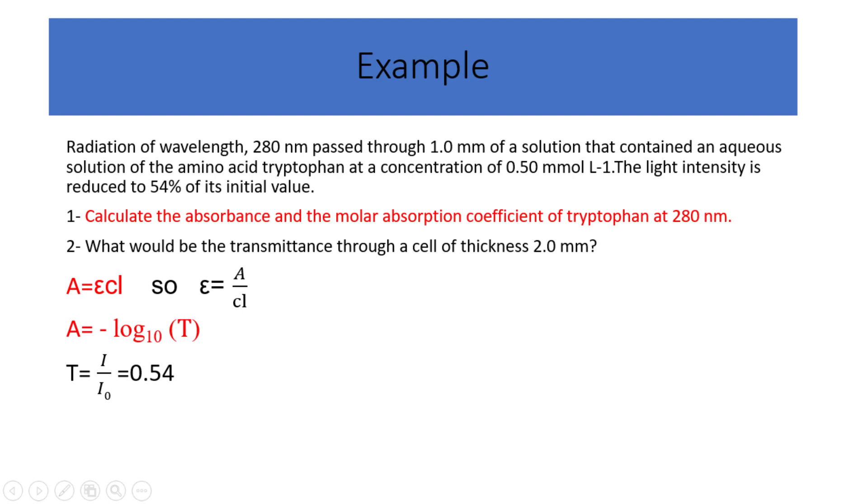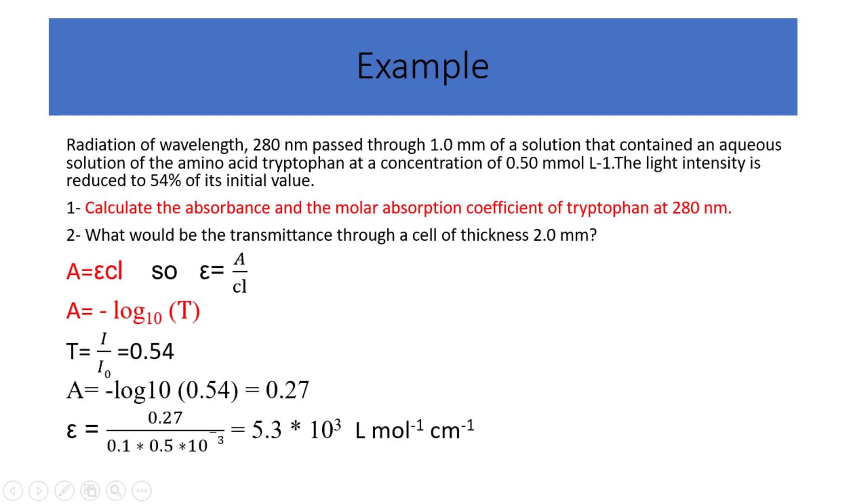By using the formula, A equals negative log base 10 of T, T equals I divided by I zero, and its value is 0.54. So, by calculation, A equals negative log base 10 of 0.54, and its value is 0.27.